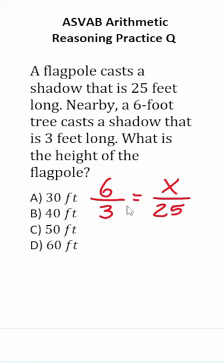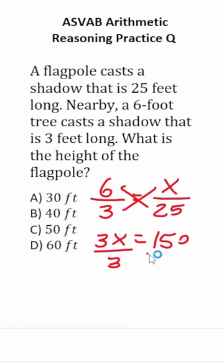Now that we have this proportion, we just use cross-multiplication to solve it. Three times X is 3X. Six times 25 is 150. Divide both sides by three to get X by itself. X equals 50.